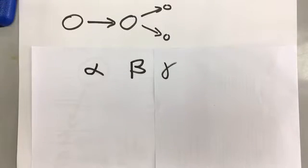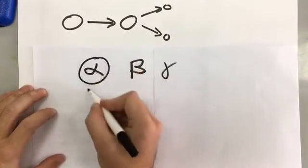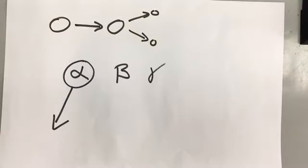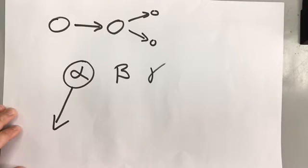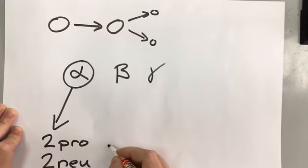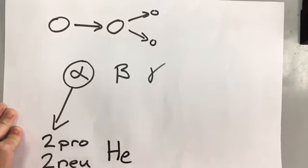The first one we're going to talk about is alpha. During alpha radiation, the nucleus of the radioactive isotope emits two protons and two neutrons. They're all bunched together, and we can also say that it emits a helium nucleus, because that's the same as saying two protons and two neutrons.